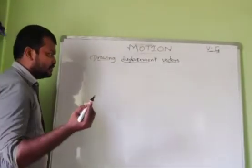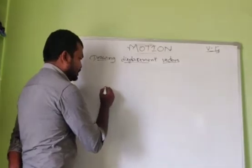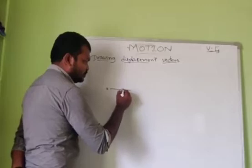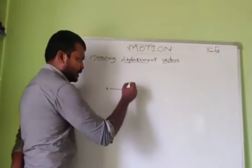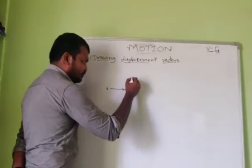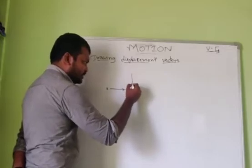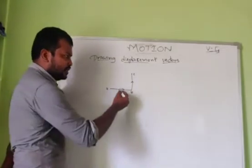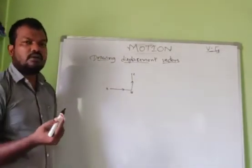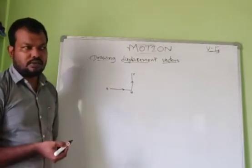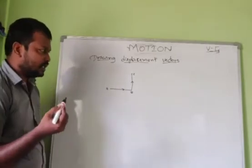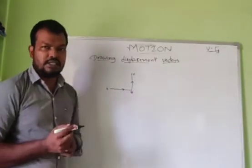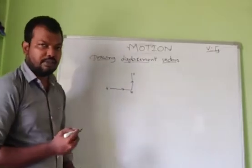Now let us see that with some examples. For example, there is a point A. From this point, a body might have moved in a certain direction, then reaches to point B, then changes its direction and reaches to point C. This is the path of the distance. How do you draw the displacement vector? Displacement is the shortest distance from initial position to final position.